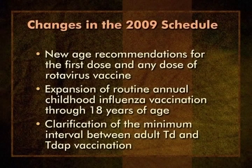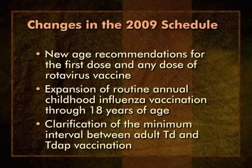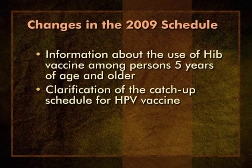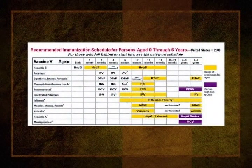Creation of immunization schedules is a complicated, year-long process that requires input from ACIP as well as members of the Academies of Pediatrics and Family Physicians and others. The Childhood and Adolescent schedules must be revised and approved no later than October of each year in order to be published in January. There are several important changes in the 2009 schedule. These changes include new age recommendations for the first dose and any dose of rotavirus vaccine, expansion of routine annual childhood influenza vaccination through 18 years of age, and clarification of the minimum interval between adult Td and Tdap vaccination. Other changes include information about the use of Hib vaccine among persons five years of age and older, and clarification of the catch-up schedule for HPV vaccine.